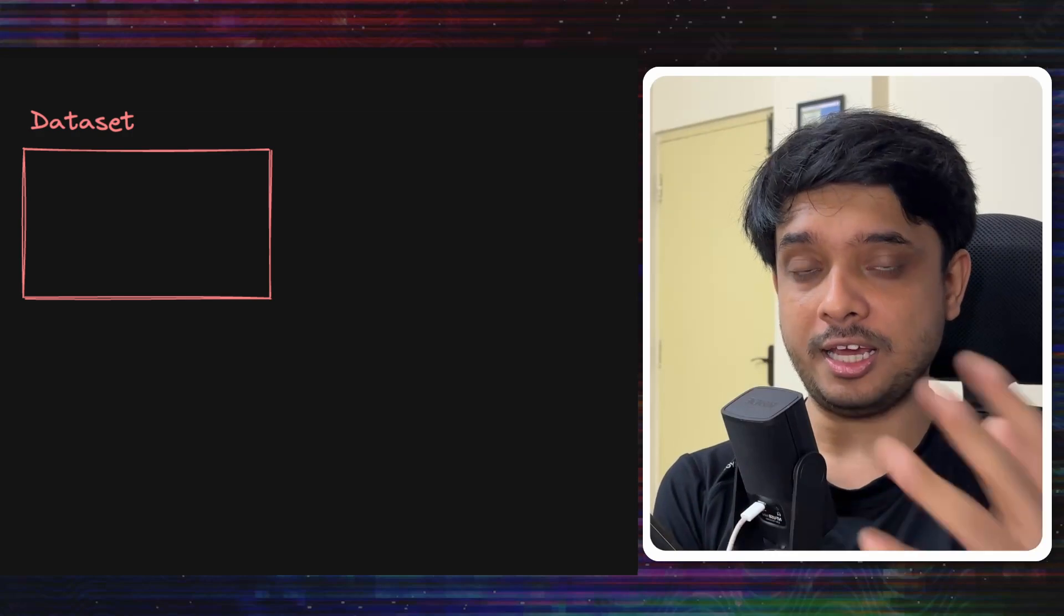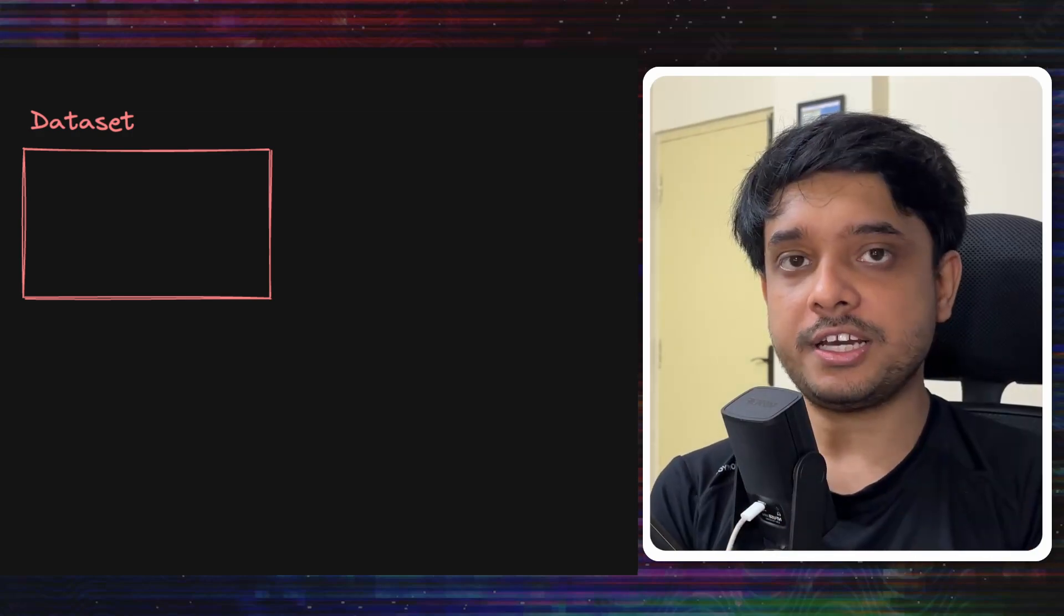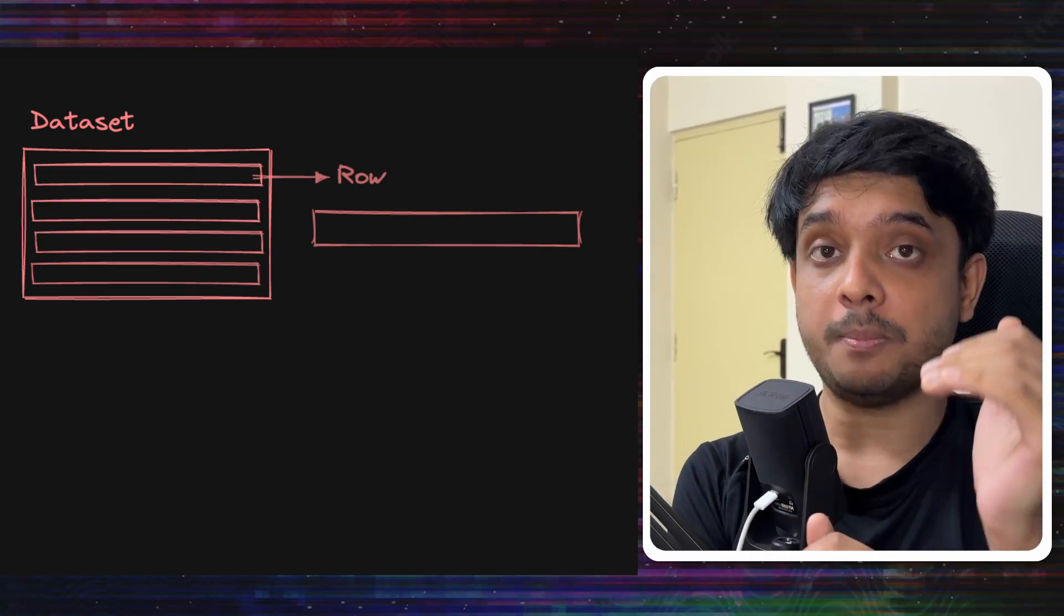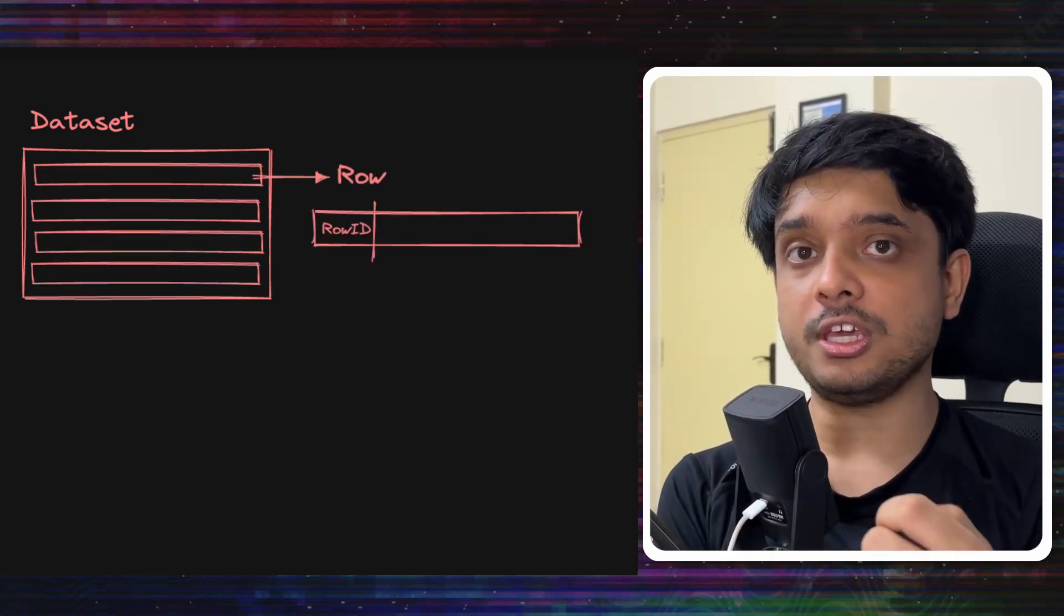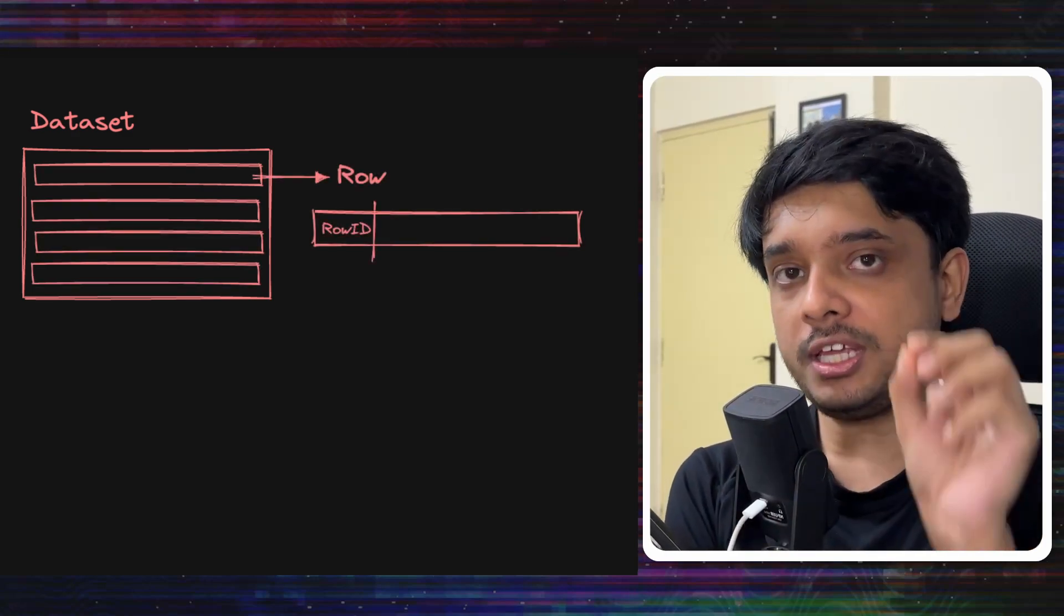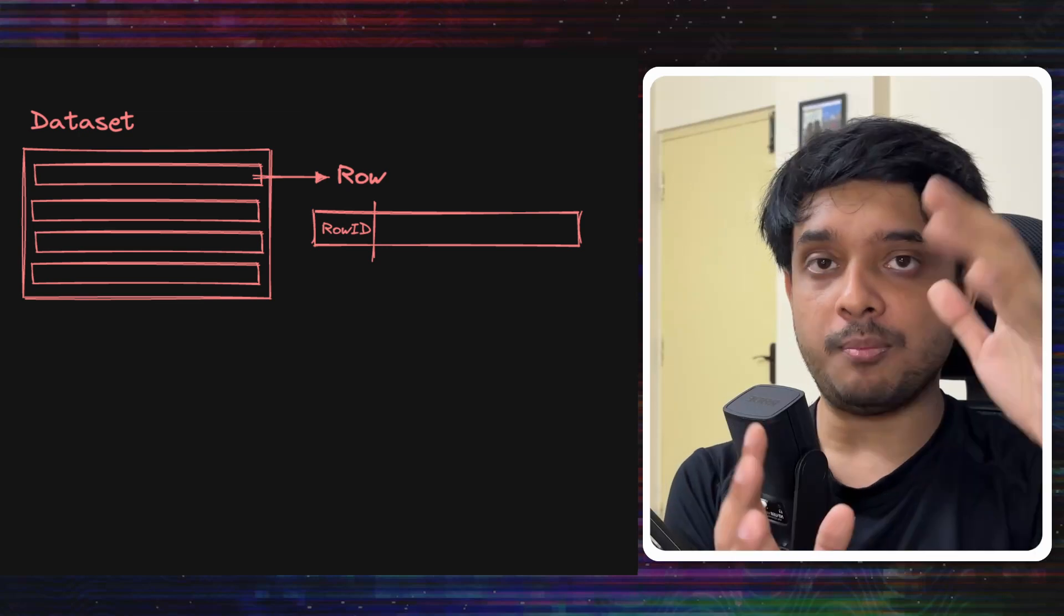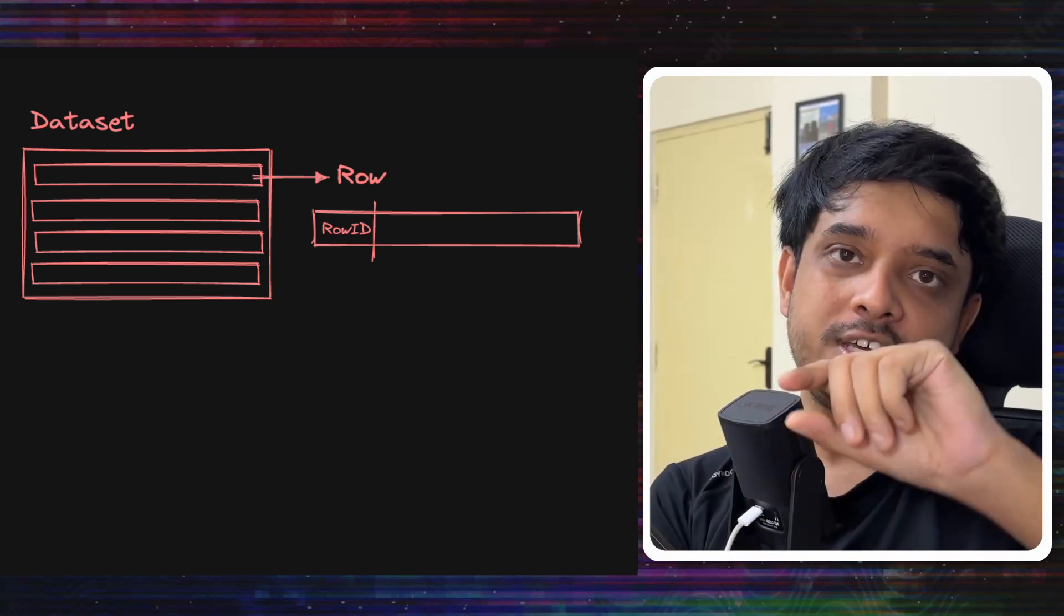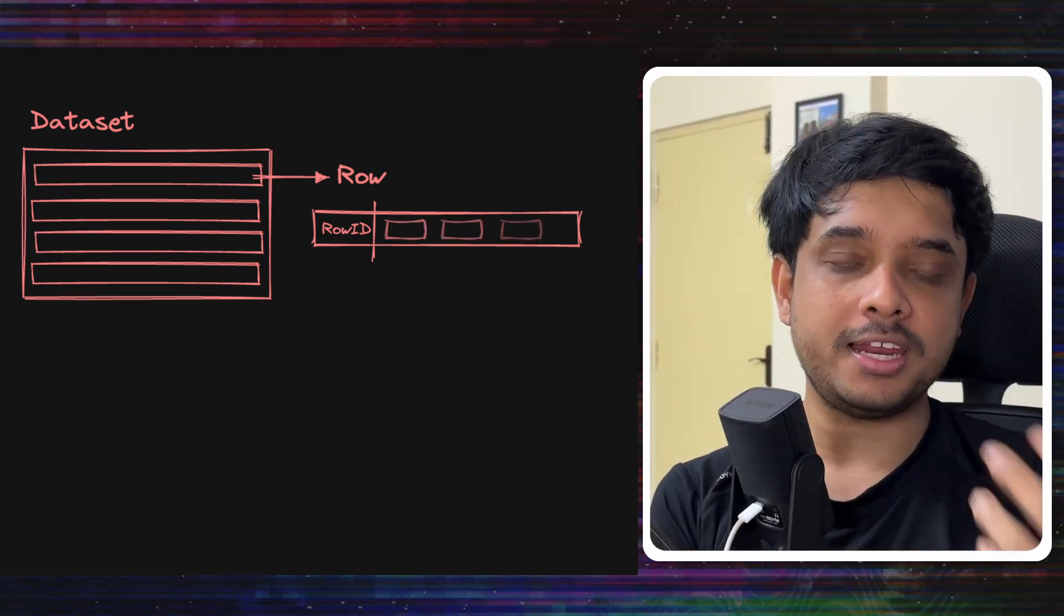In their database they call a table as a data set. So you can think a data set like a table. The data set or the table is comprised with many rows. Each row must have a row key or a row ID which will uniquely identify this row among all the rows in the data set.